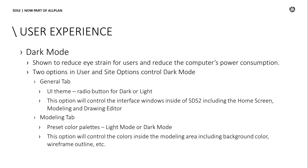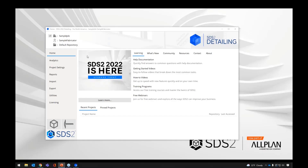The next option is going to be under the Modeling tab, still under User and Site Options, and this is going to be the Preset Color Palette — light or dark mode as well. What this is going to control is things like your background color, the wireframe outline, the members and how they're going to look, and the text. If we change to a darker background, we need lighter text so it shows. I'm going to go ahead and go into SDS2 and show you these options.